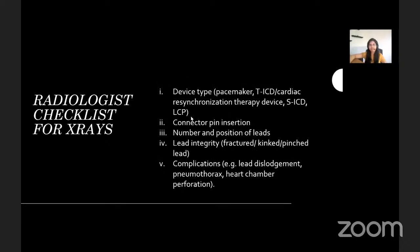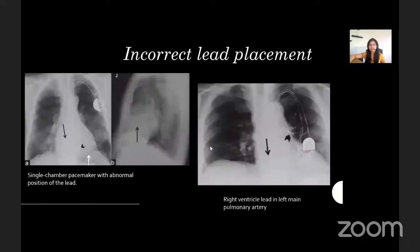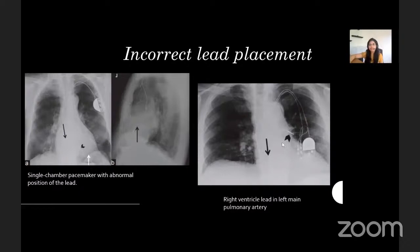It is wise to follow a checklist when reading chest radiographs of patients with devices — specifically looking for device type, connector pin insertion, number and position of leads, lead integrity, and complications. For example, in this 73-year-old male with a single chamber pacemaker, the lead is directed inferiorly through the right atrium and taking a serpentine course to the coronary sinus; the lead tip is misplaced in an epicardial vein instead of the right ventricular apex. The lateral view confirms the lead misplacement. Another example shows a misplaced right ventricular lead taking a Swan-Ganz-neck course and ending in the left main pulmonary artery instead of the right ventricular apex; the right atrial lead is correctly placed in the right atrial appendage.